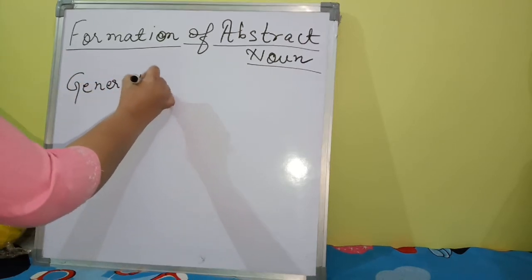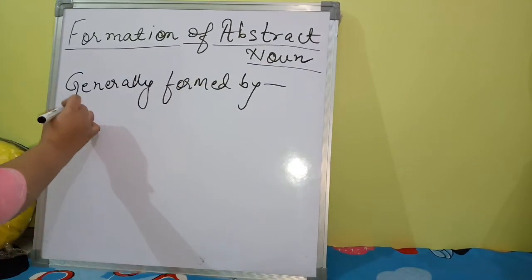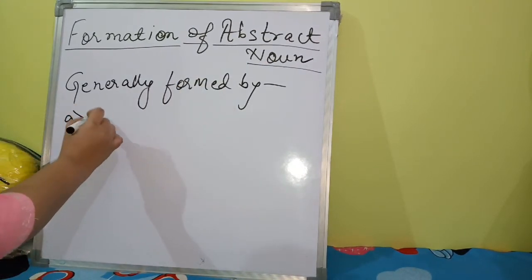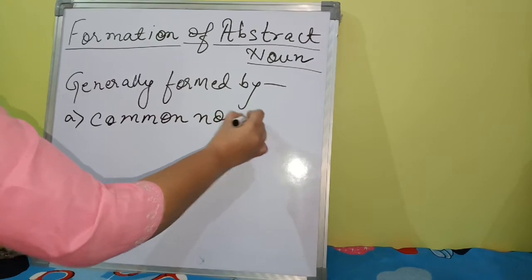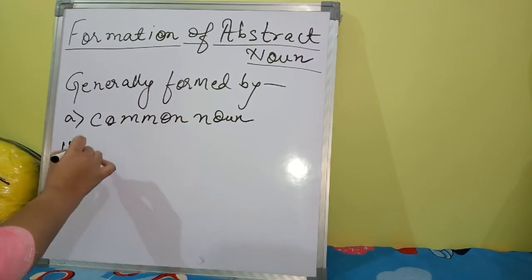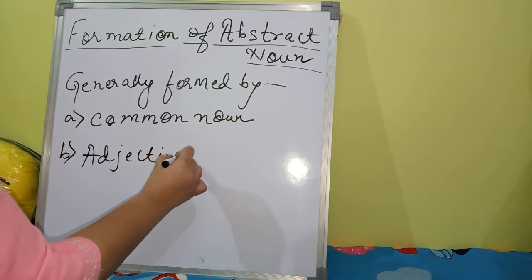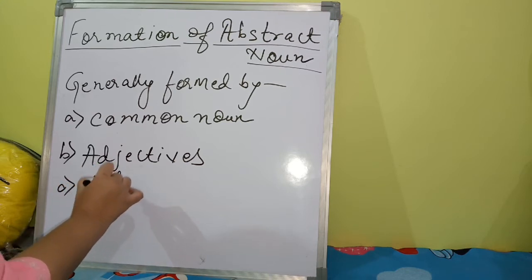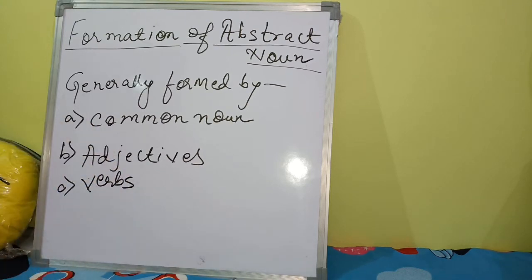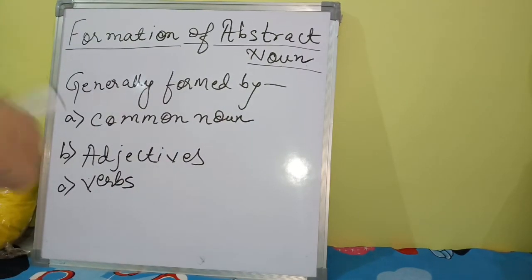Abstract nouns are generally formed from three sources: from common nouns, from adjectives, and from verbs. This information about forming abstract nouns from common nouns, adjectives, and verbs is what we will now study.